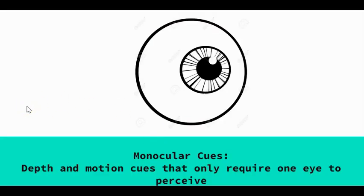Next, let's talk about monocular cues — how we perceive depth and motion using just one eye. There are monocular cues, which take one eye to perceive and understand, and binocular cues, which take two eyes to perceive and understand.